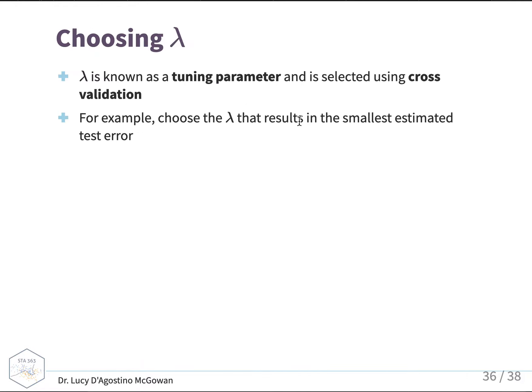Lambda is known as a tuning parameter, and it is selected using cross-validation, which you have learned so far. For example, you would choose the lambda that results in the smallest estimated test error.